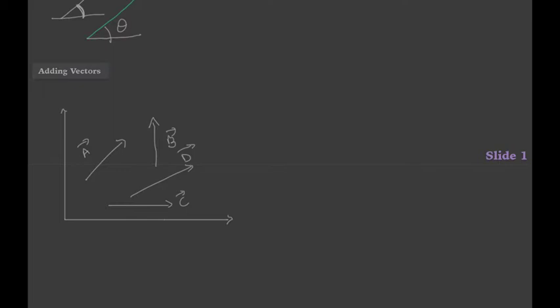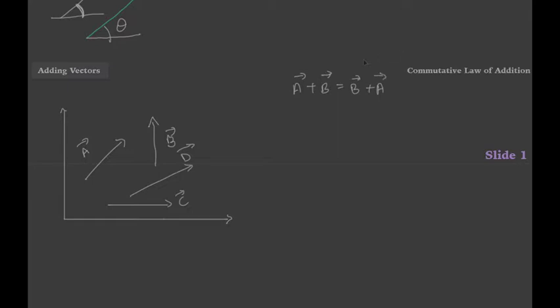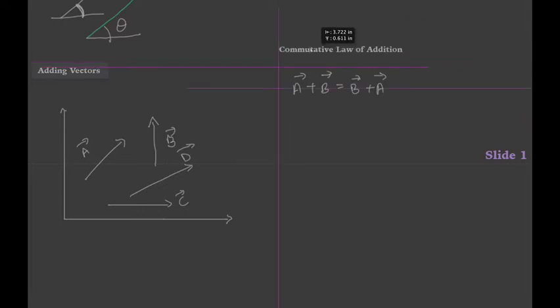We can take two laws that apply to conventional addition and apply them to vector addition. These two laws are: vector A plus vector B will always equal vector B plus vector A. This law is called the commutative law of addition.